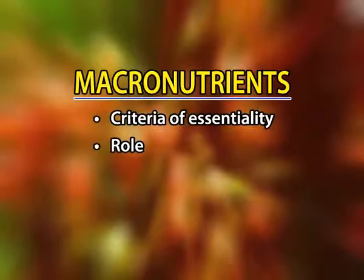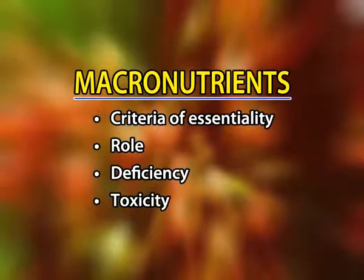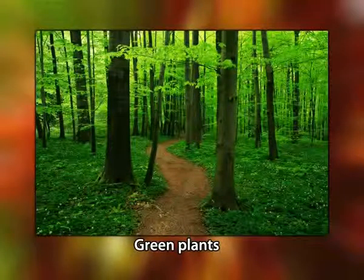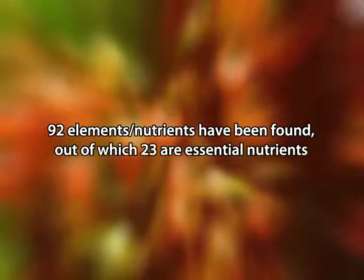Welcome dear students. Today we are going to discuss macronutrients: criteria of essentiality, their role, deficiency, and toxicity. Green plants, which are autotrophic, require some inorganic mineral nutrients for their growth and development. As many as 92 elements have been found, out of which 23 are essential nutrients — without them, plants do not complete their life cycle.